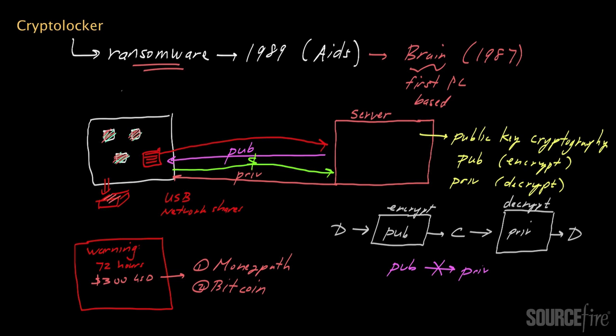So as I mentioned earlier, there is nothing particularly earth-shattering about CryptoLocker or the techniques it uses. I would say the big interesting thing from my perspective is that it does use public key cryptography to perform the encryption, which is an improvement over how some ransomware might have performed encryption in the past.